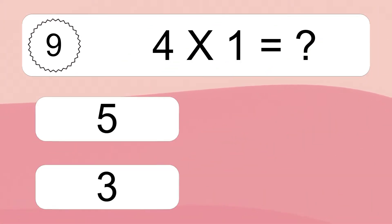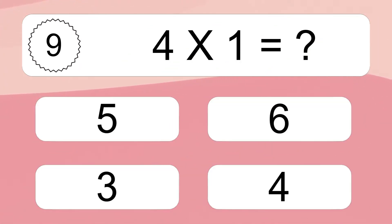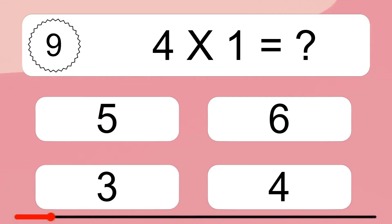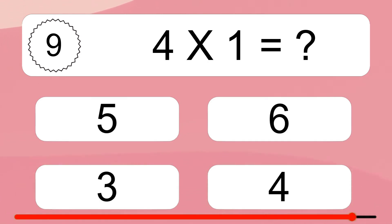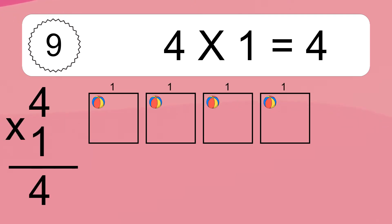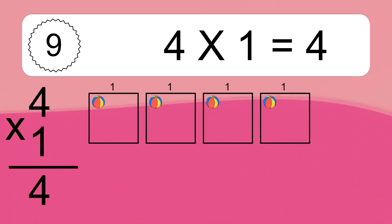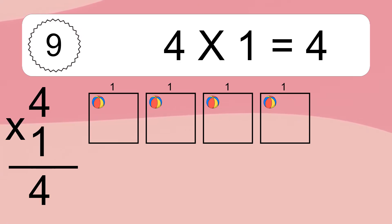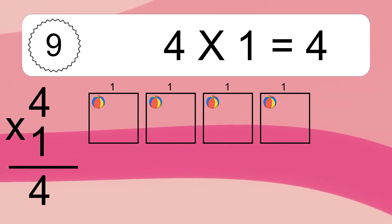Four times one equals what? Four times one equals four. We have four boxes and each box has one colorful ball inside. If you count all the balls in all the boxes together, you will have four times one balls. This equals four balls.